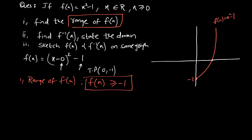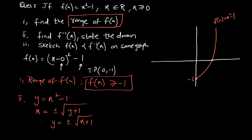To find f⁻¹(x): start with y = x² − 1, make x the subject to get x = √(y + 1). The domain of the function is x ≥ 0, so the range of the inverse must be ≥ 0. Therefore the inverse function is f⁻¹(x) = +√(x + 1).